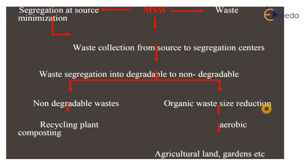This is a typical flow diagram which shows segregation and minimization at the source. Segregation is done at the household level. This waste then goes for collection from the source to a segregation center, where it is separated into degradable and non-degradable waste. Non-degradable waste is further separated for recycling plants, while organic waste undergoes composting or size reduction. By aerobic decomposition, the waste product is converted into a stable form for agricultural land, manure, or garden use.